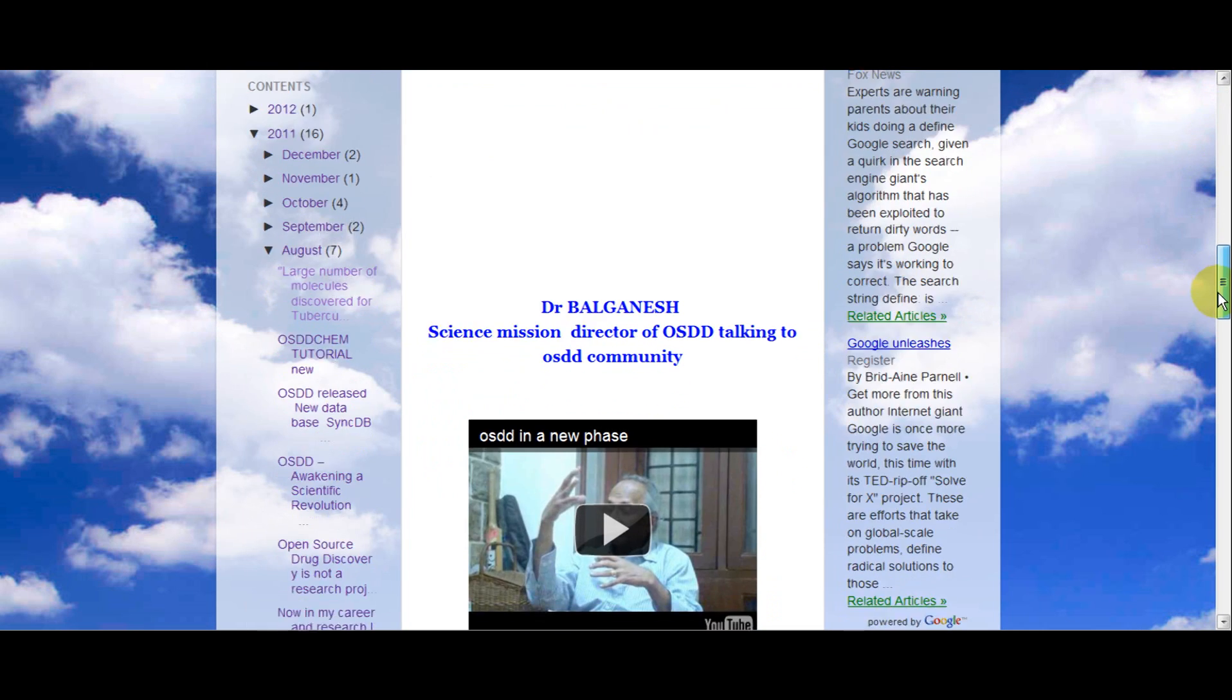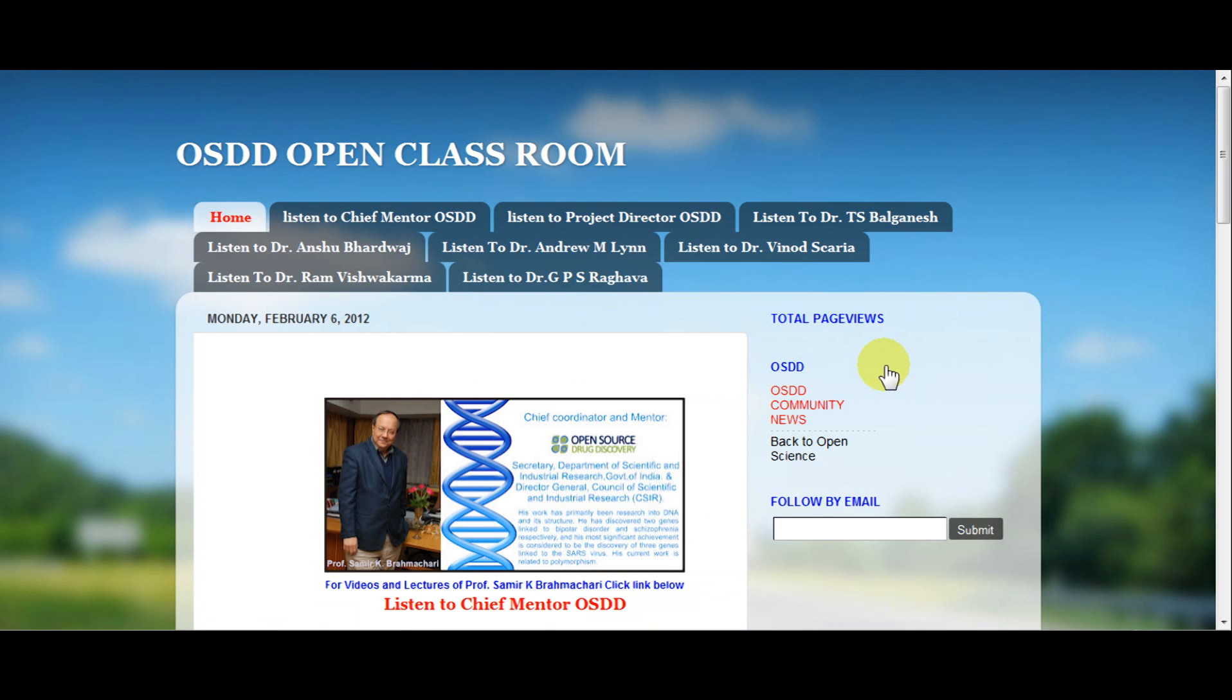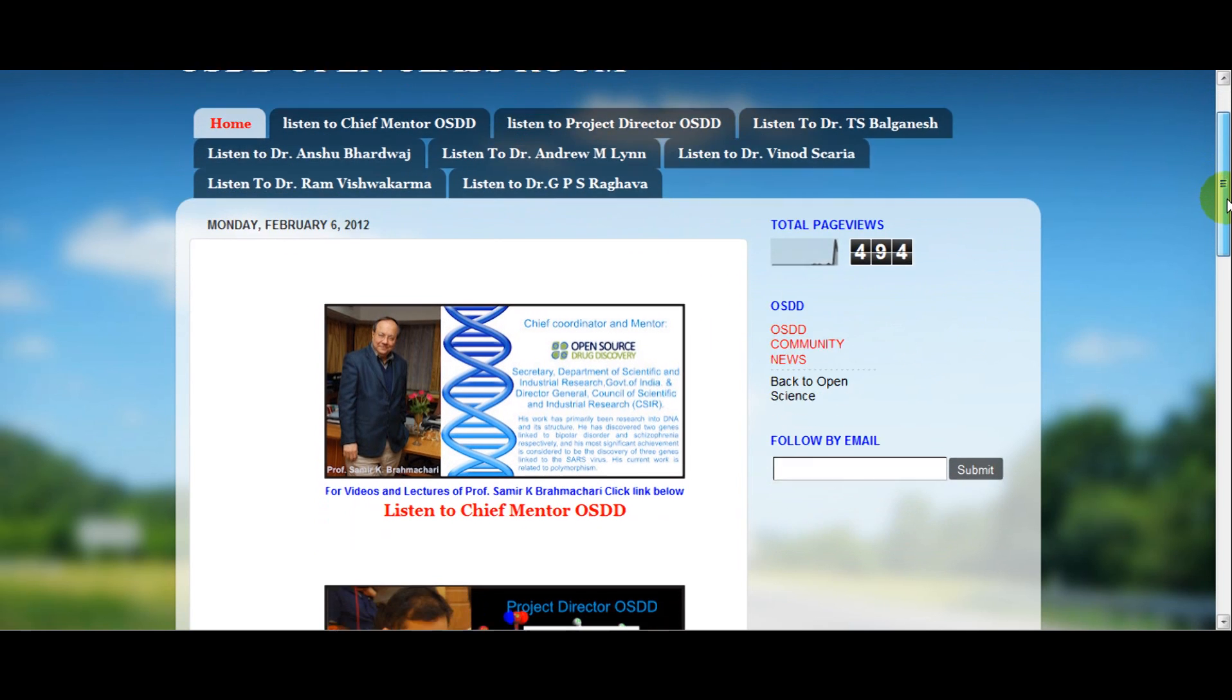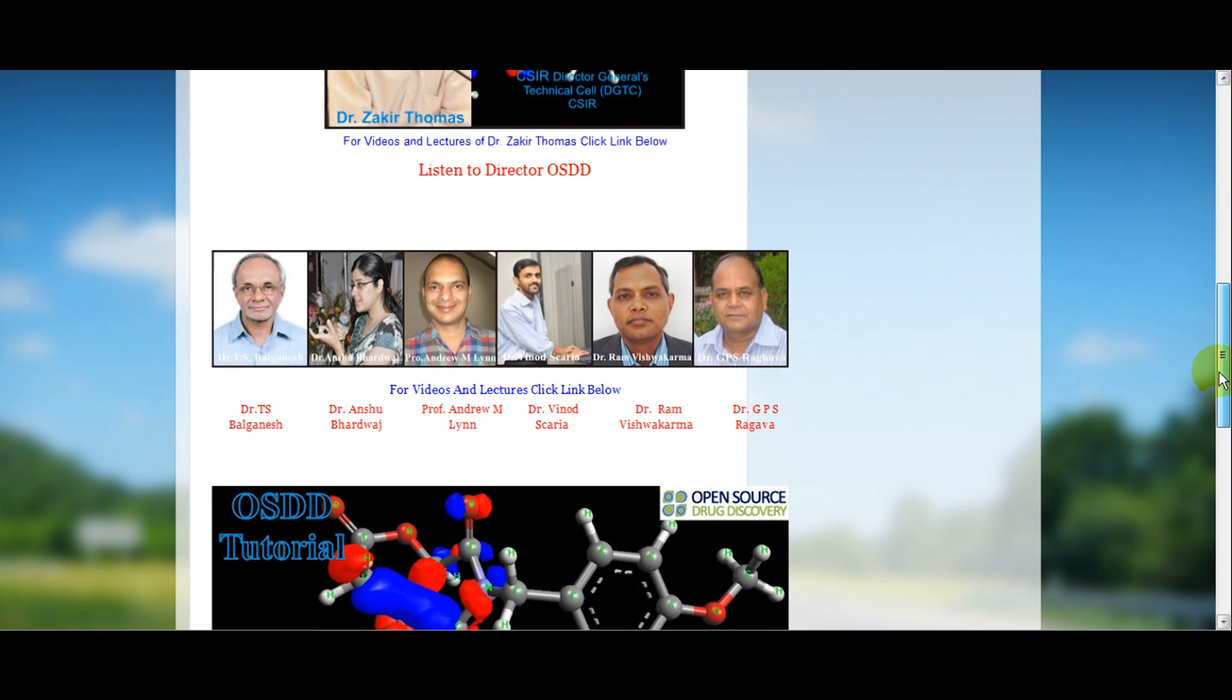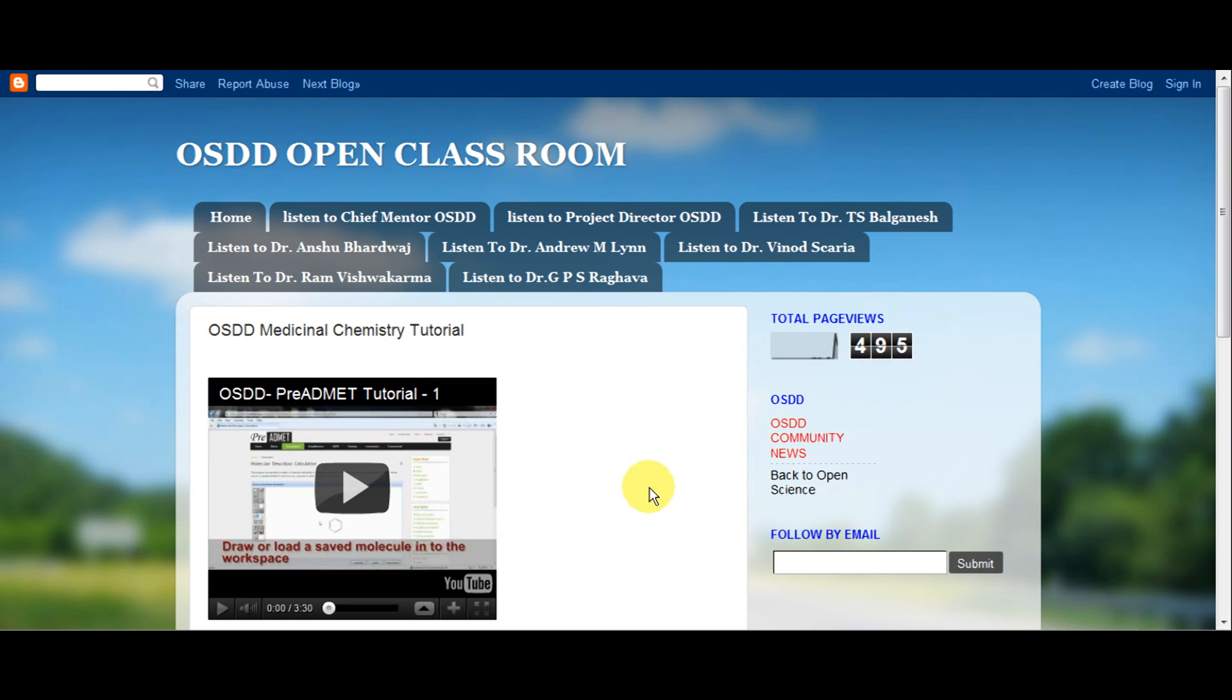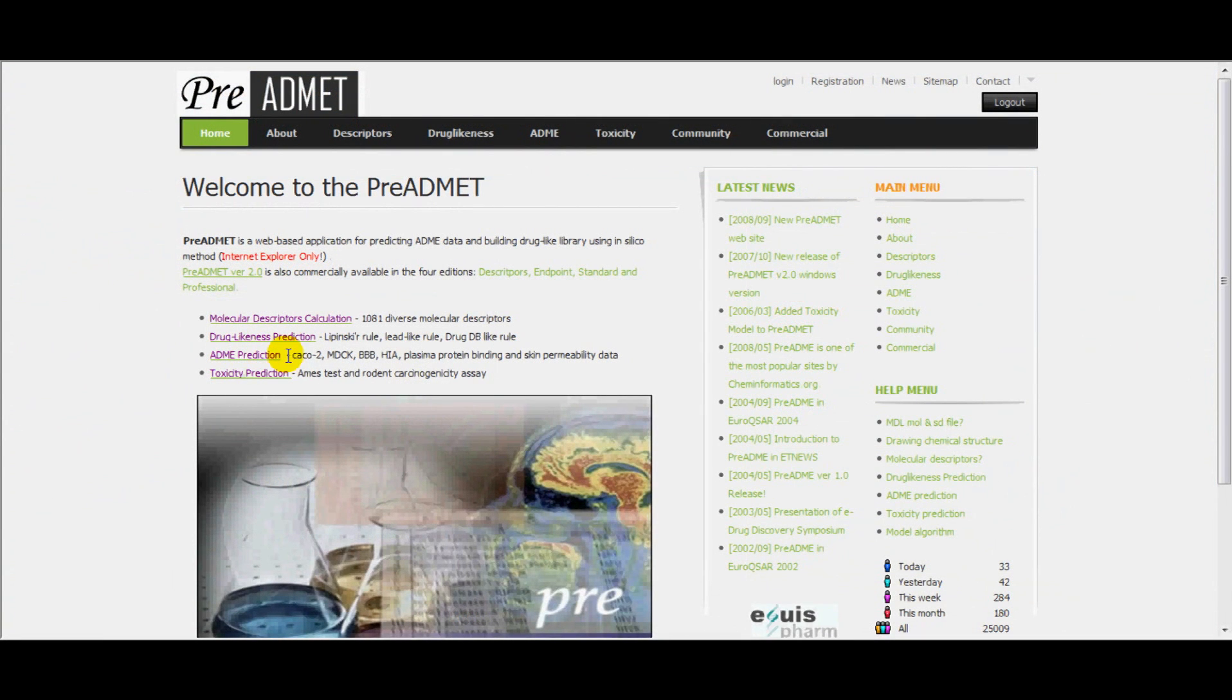Then go to OSDD open class and select medicinal chemistry. In the medicinal chemistry tutorial, we have learned about how to work on different program modules of ADMET, such as molecular descriptor calculation, drug likeness prediction, ADME prediction, and toxicity prediction. In this tutorial, you can learn about drug likeness prediction in detail.